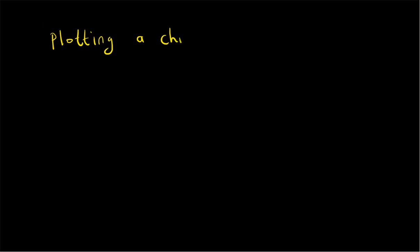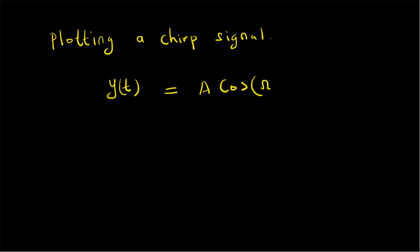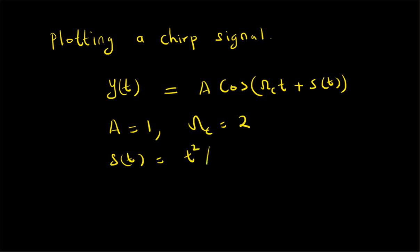Hello, welcome. In this video, let us look at the plotting of a chirp signal. We will look at a typical example where y(t) is equal to A times cos of (omega_c * t + s(t)). That is the model for a chirp signal. In this specific example, we assume that A is equal to 1, omega_c is equal to 2, and s(t) has the structure t squared divided by four.